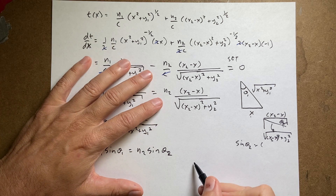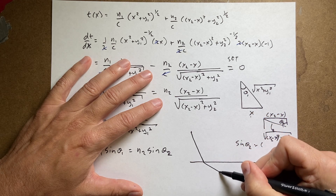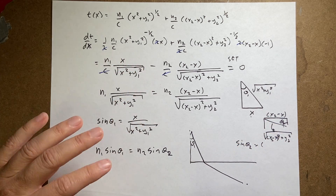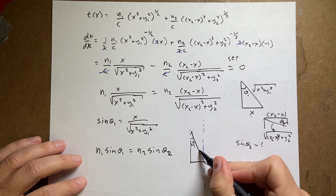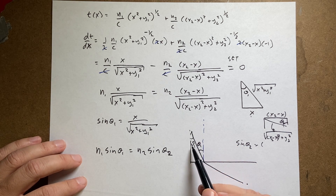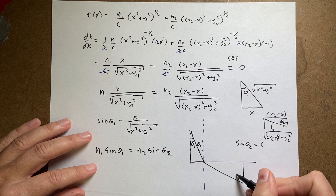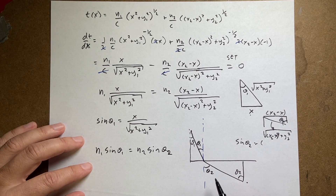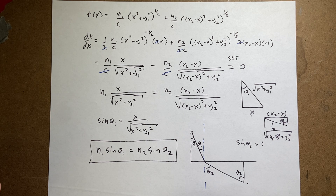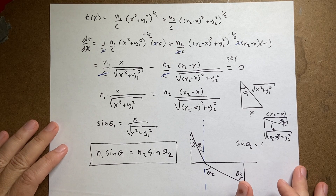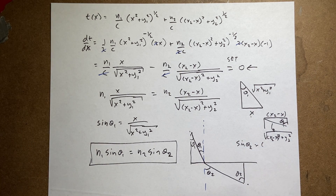Let's verify the angles. Drawing the path, θ1 is the angle in medium 1 and drawing a line parallel to the y-axis, the alternate interior angles confirm θ1 is the angle of incidence. Similarly θ2 is the angle of refraction. So n1·sin θ1 = n2·sin θ2 is indeed Snell's Law. Technically what we found is a stationary point where the derivative equals zero, which doesn't automatically mean it's a minimum — but it is in this case.